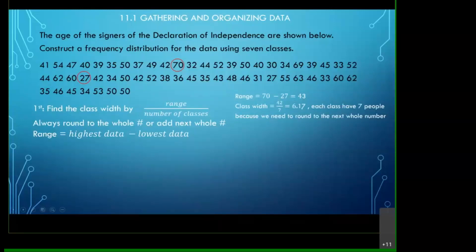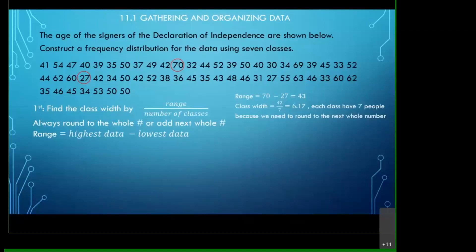Now we take 43 divided by 7, which gives us approximately 6.127. One important rule about class width: you always round up to the nearest whole number. I know this is not the typical rounding rule, but we cannot include half a person, so no matter what the decimal is, you always go up to the next whole number. So 6.127 rounds up to 7.